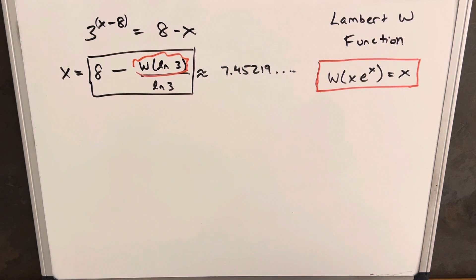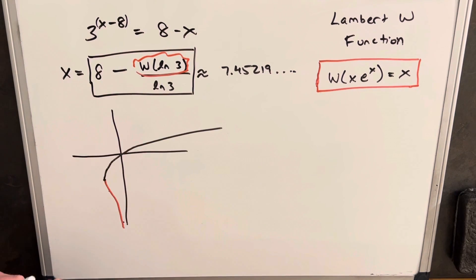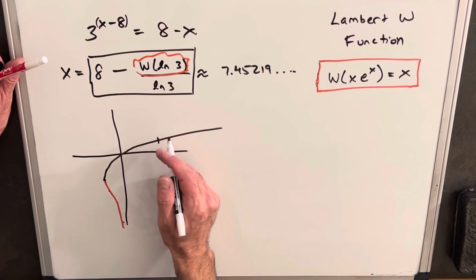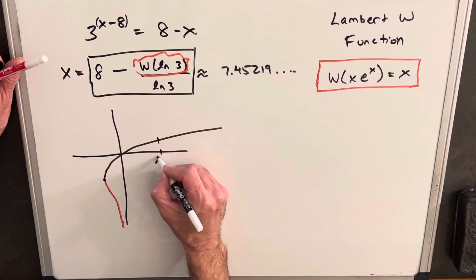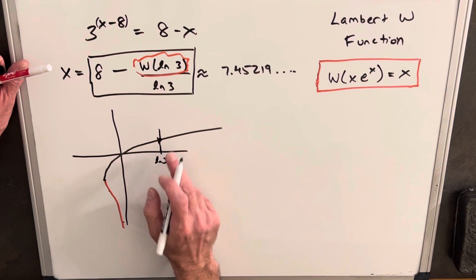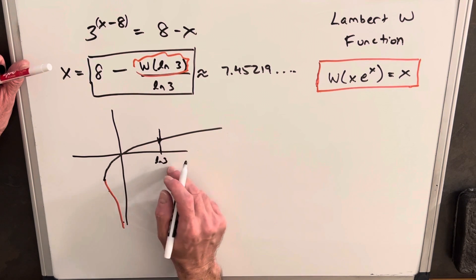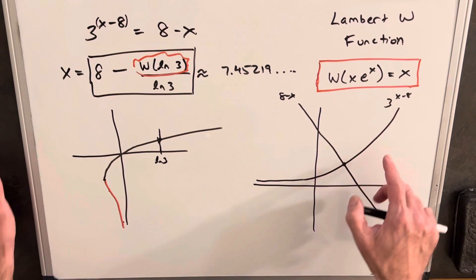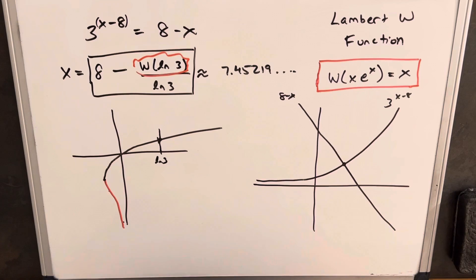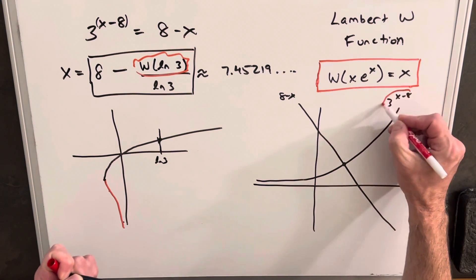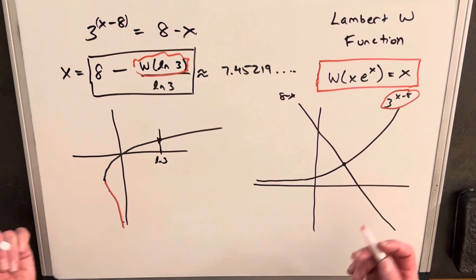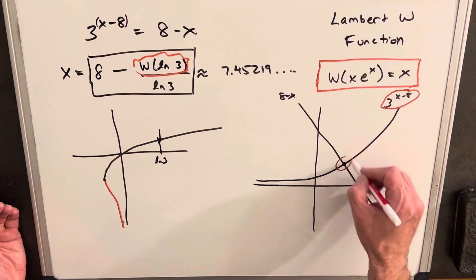Looking at the graph of the Lambert W function, around the value of ln 3 — about 1.1 — we can see there's only one real value of the Lambert W function in the entire positive region. Then looking at the graph of 3^(x minus 8) versus 8 minus x, which is just a line with slope negative 1, it's clear to see there's only this one solution.